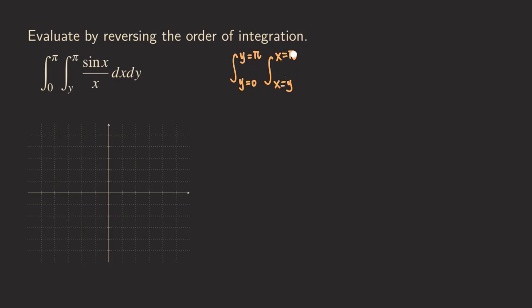By writing this out, it makes it easier to figure out what the region looks like, and once we draw the region, we can reverse the order of integration more easily. We start with x equals y, which is also y equals x — a line that goes through the origin with slope 1.